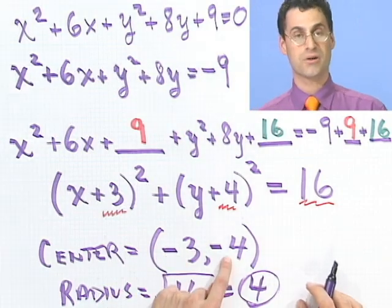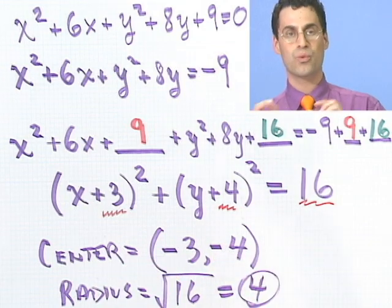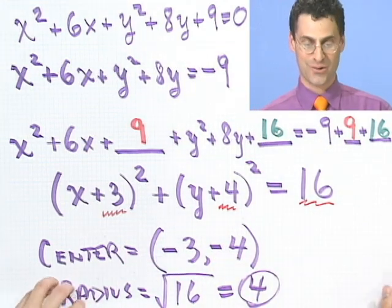So the radius is 4. The center is minus 3 minus 4. I think this is really cool, by the way. You can take sort of garbage like this, and just by a little bit of completing the square, adding a couple things in, all of a sudden decode exactly that it's a circle, where the center is and where the radius is. I just think that's really cool.